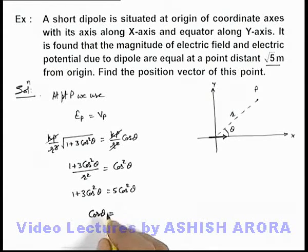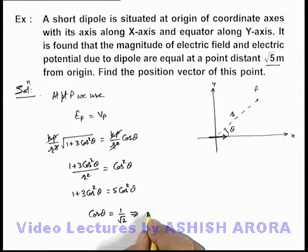We are getting 2cos²θ = 1, so cosθ will be 1/√2. This implies the value of θ we are getting is 45 degrees.